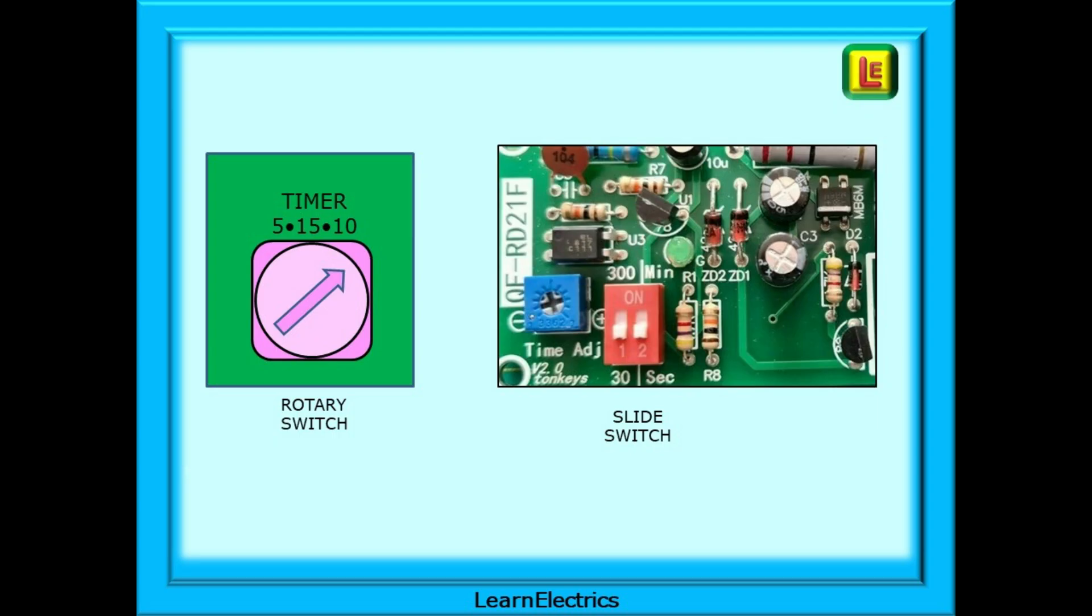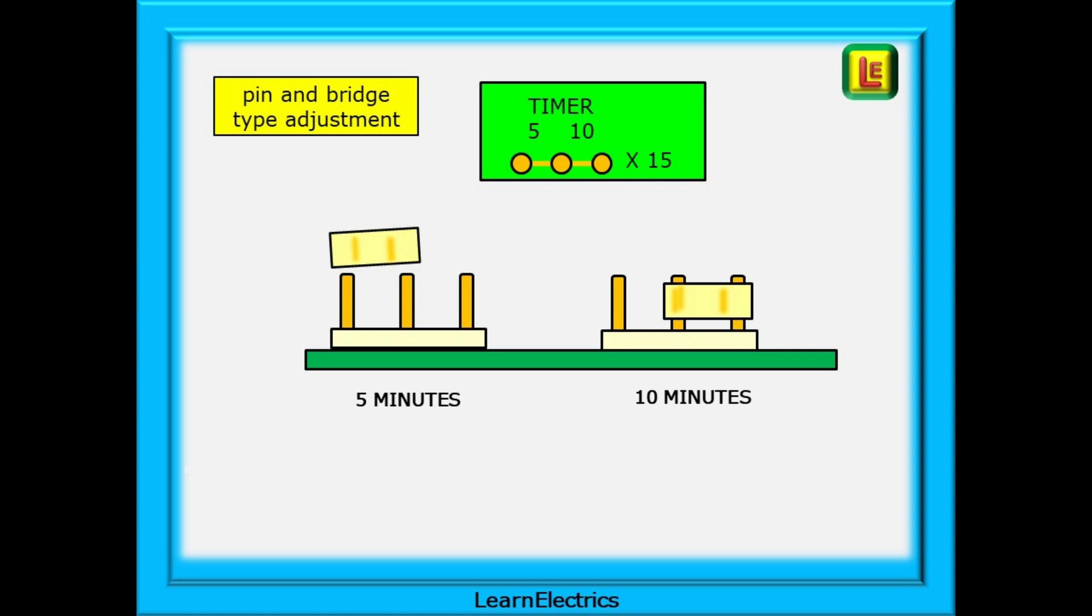Some are accessible from the outside, others can only be adjusted by removing the fan cover. Another method is the pin and bridge type. Three pins are available as shown here and where you place the linking bridge determines the overrun time. In this example it allows a five or ten minutes overrun or 15 minutes if no link is used.